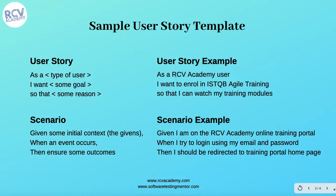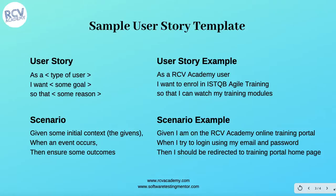This is a sample user story example. Within that user story, you can have multiple scenarios. Scenarios start with keywords like given, when, then, and, but, etc. There are many keywords defined in the Gherkin language that can be used to define scenarios in the user story. You just need to understand the scenario will have keywords like given, when, then, and there could be multiple scenarios within the user story.